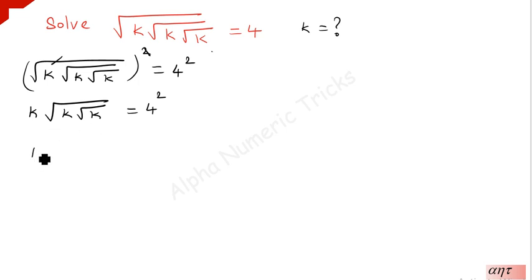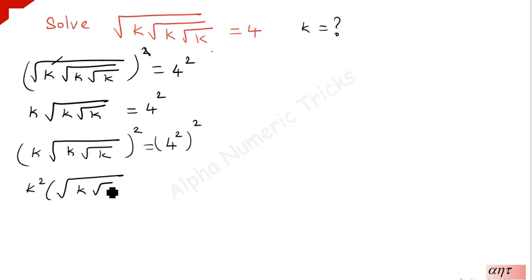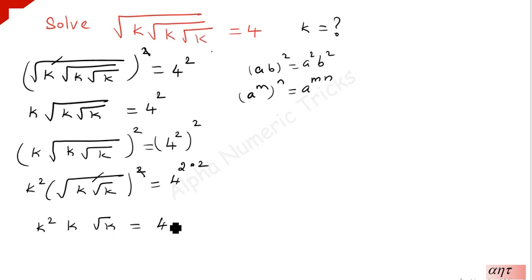Again, we have to square on both sides: k times square root of k under root k, the whole square is equal to 4 squared the whole square. You can square each term separately — k squared times the square root of k under root k the whole square. Using the rule (a·b)² = a²·b², and (a^m)^n = a^(m·n), so you take 2 times 2. Again, this square root and square get cancelled, so k squared times k times root k is equal to 4 to the power 4.